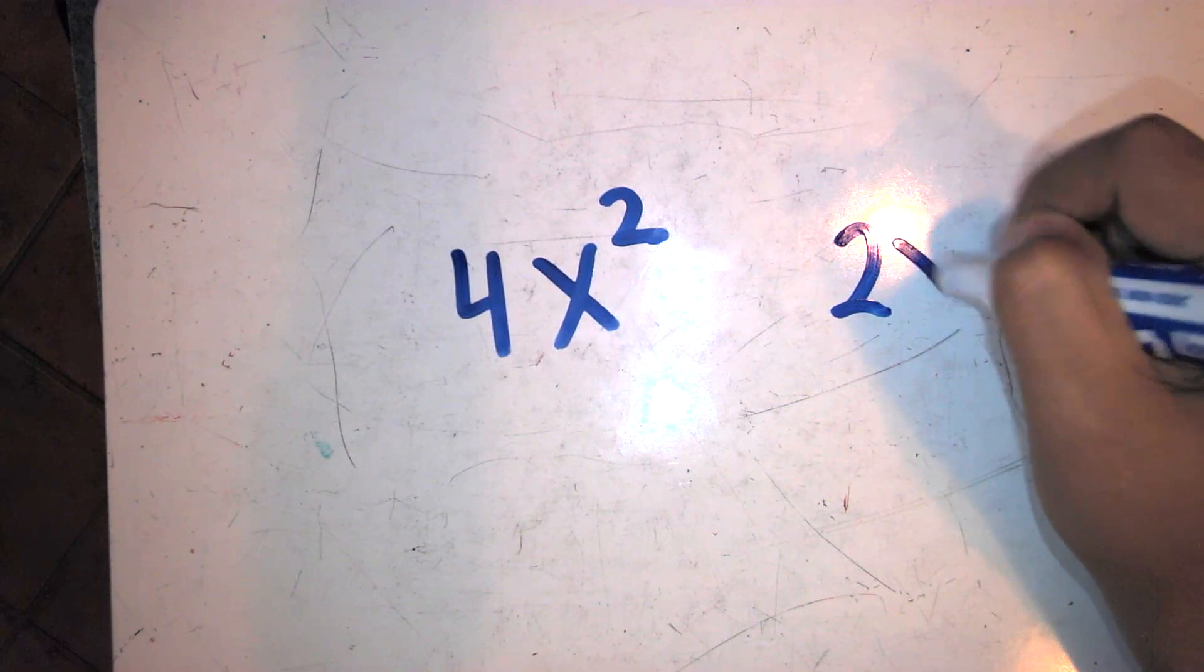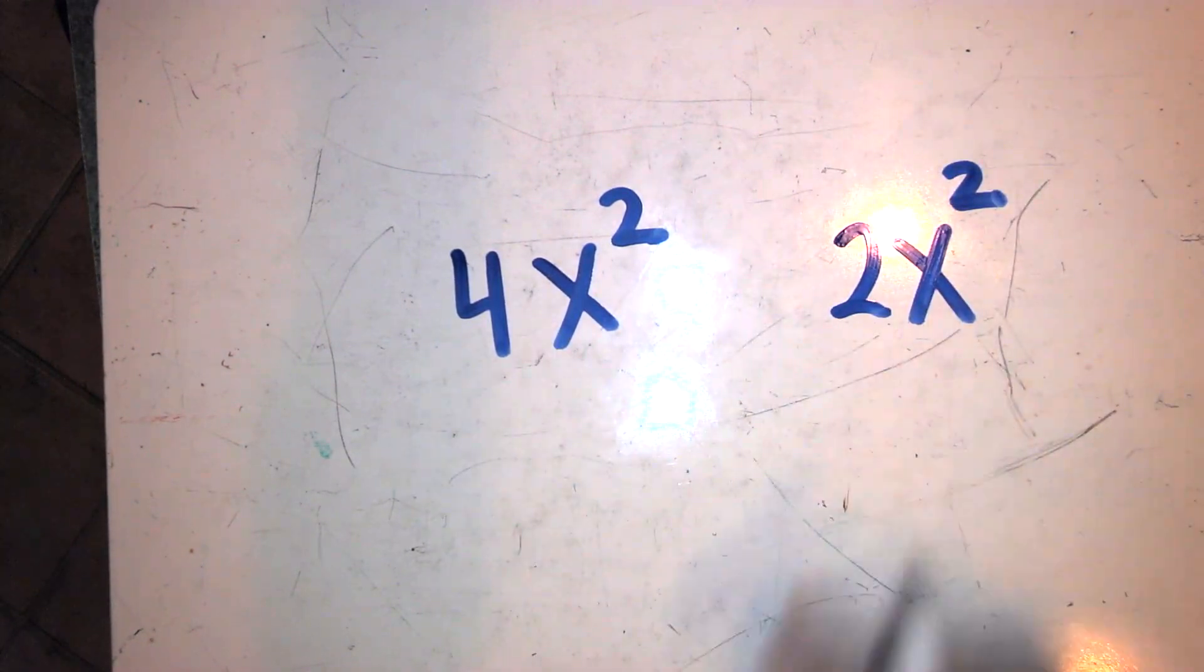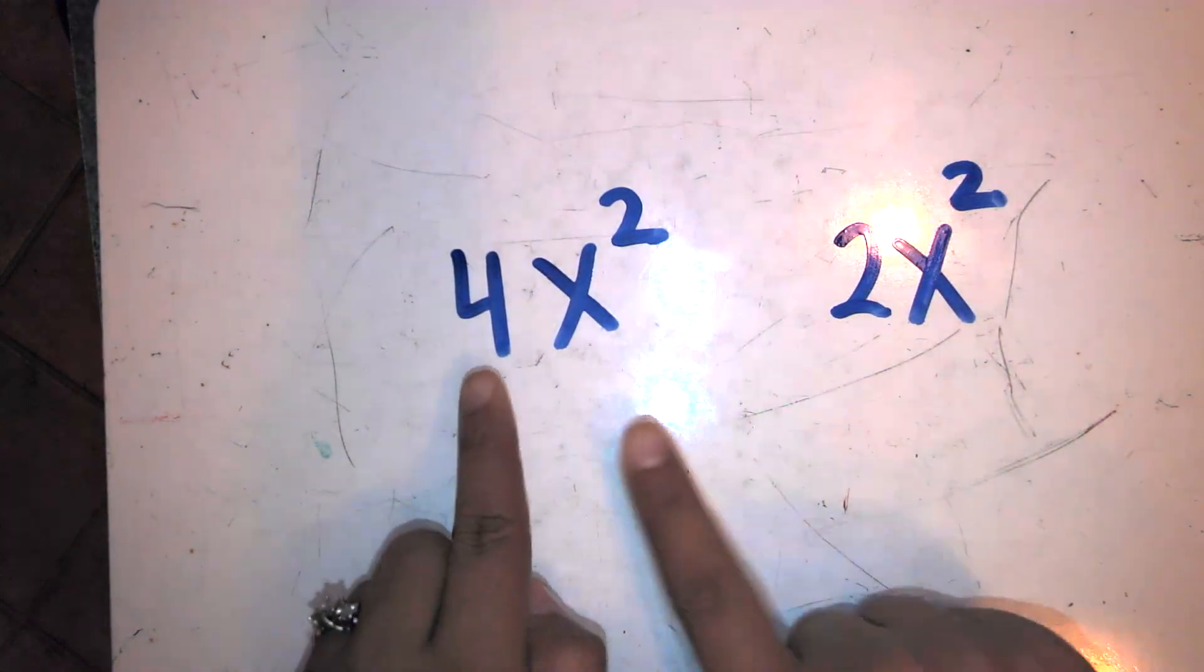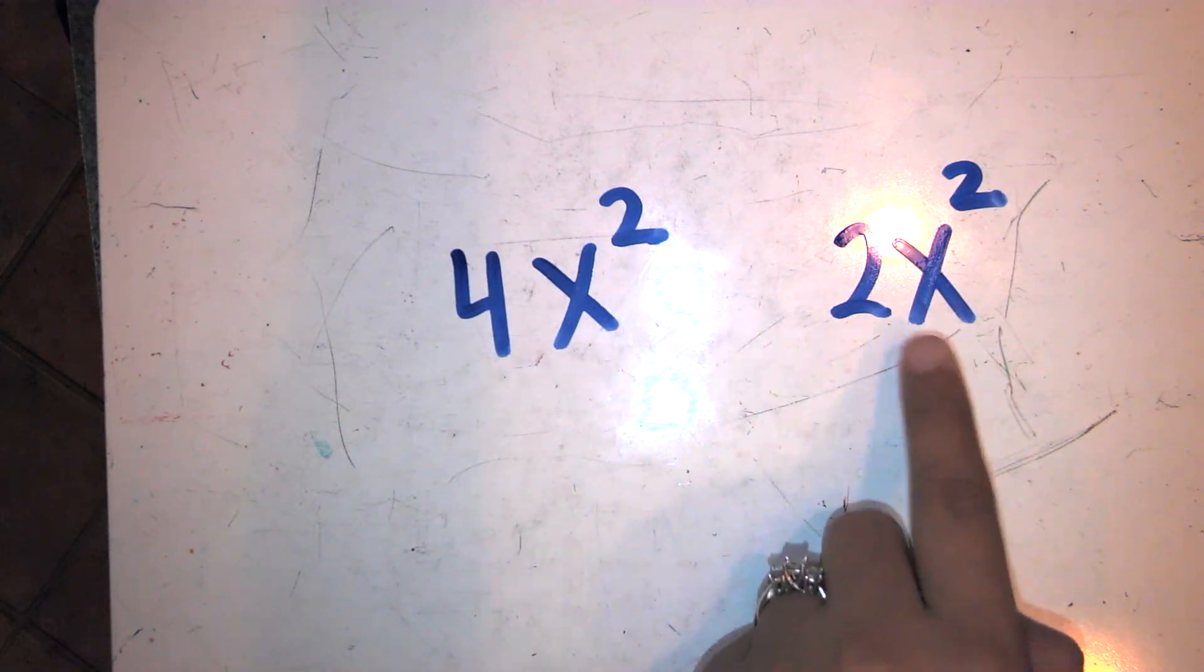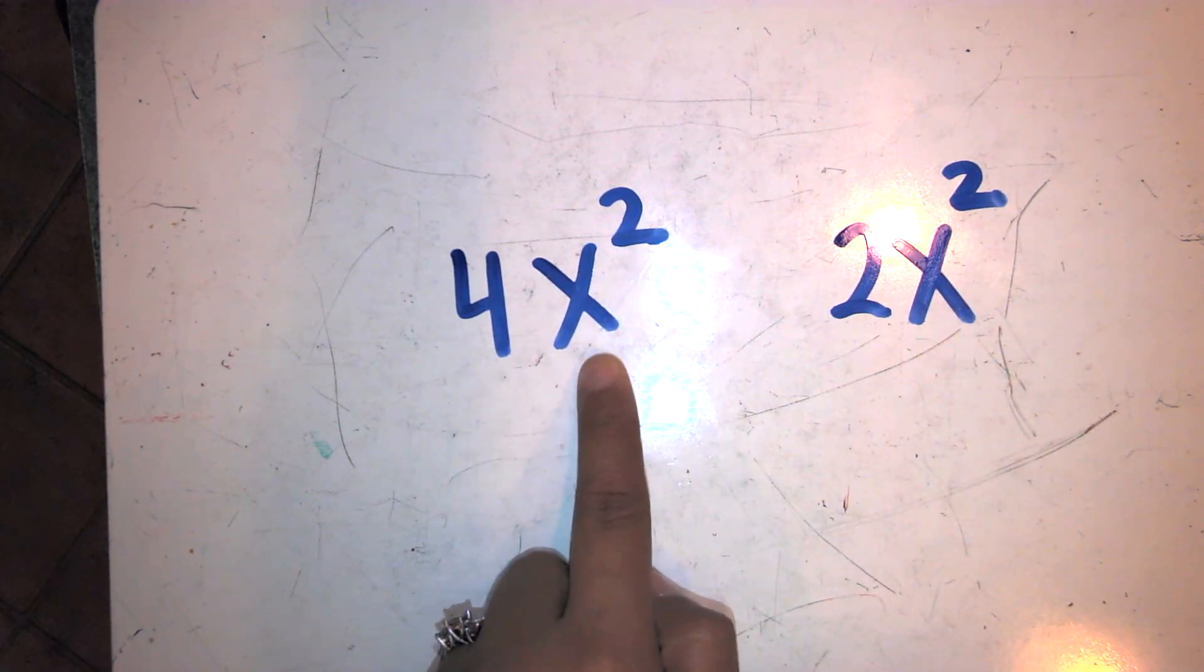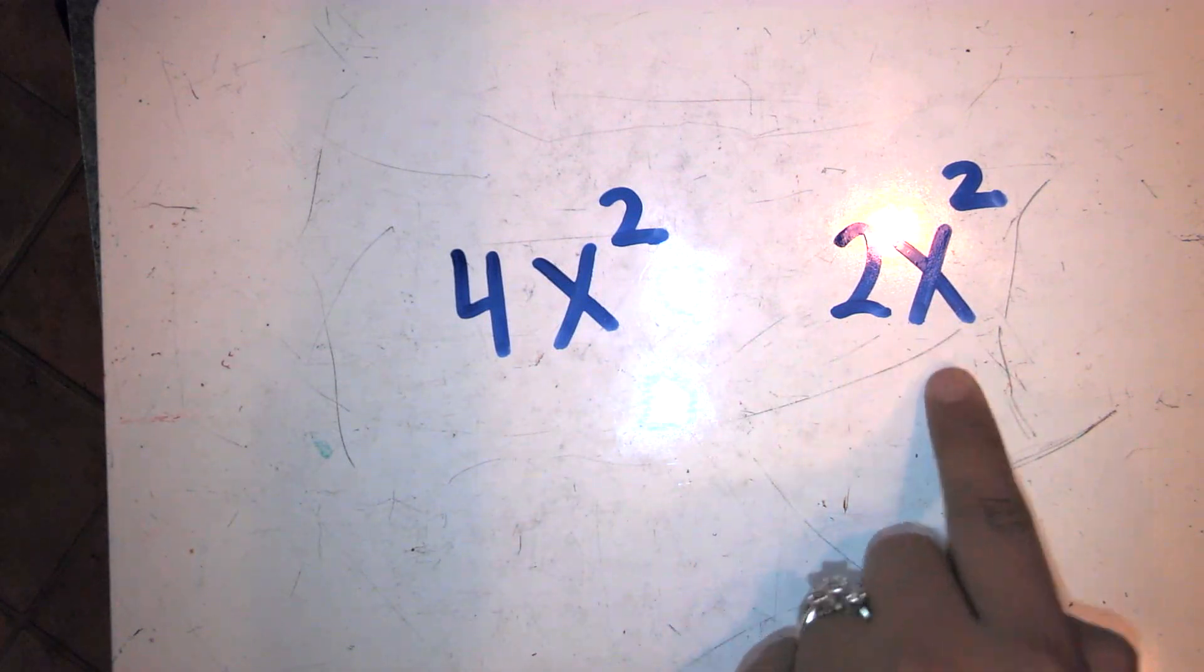So for example, these two terms are like terms. This is a group of x to the second power and a group of x to the second power. This is four groups of x squares, this is two groups of x squares.